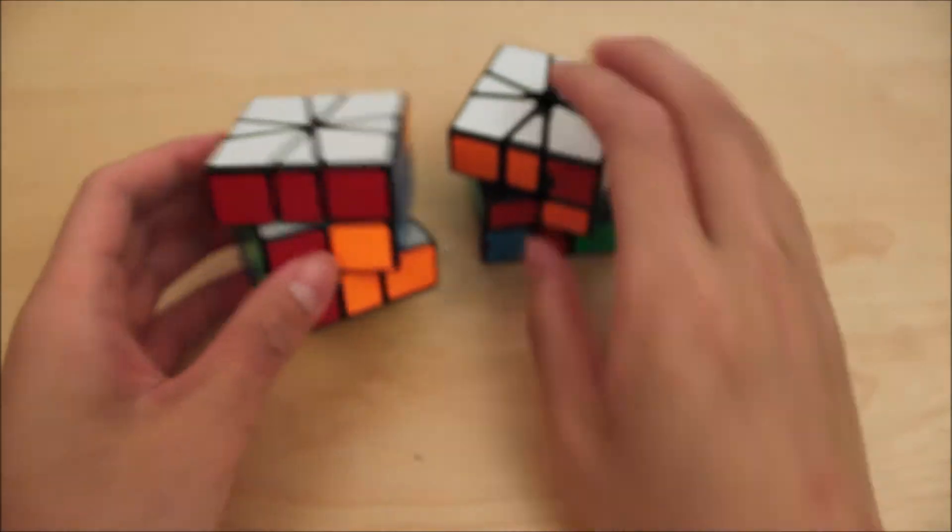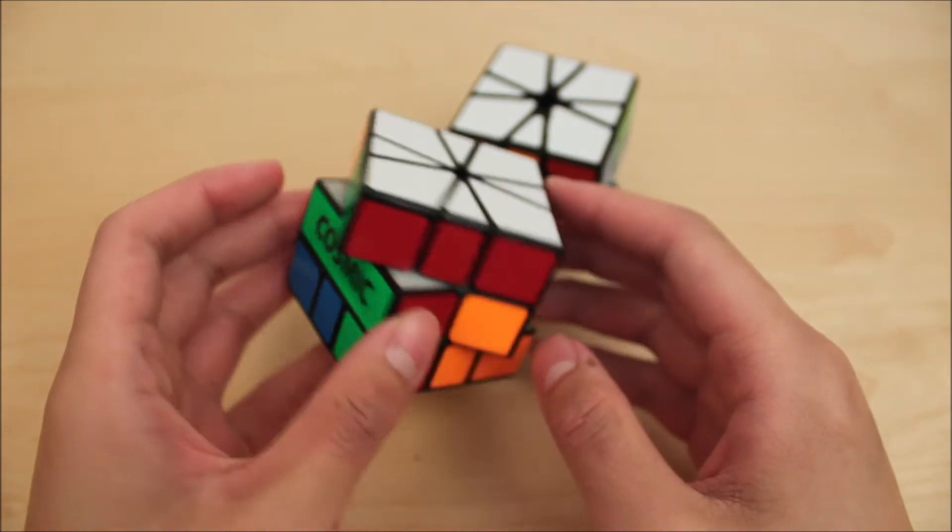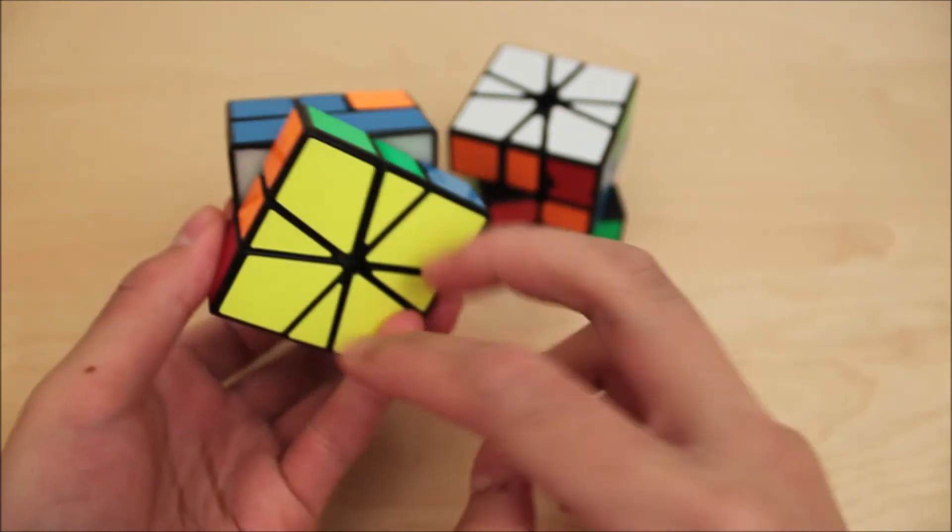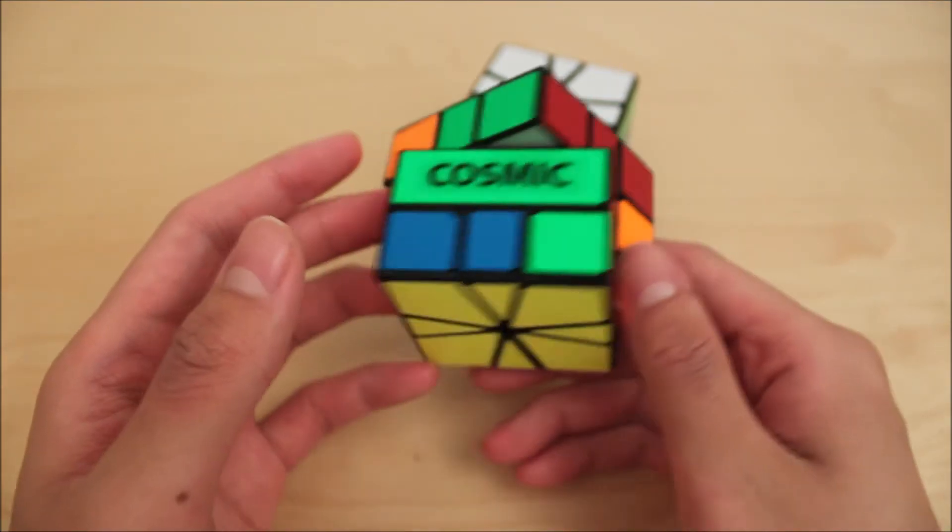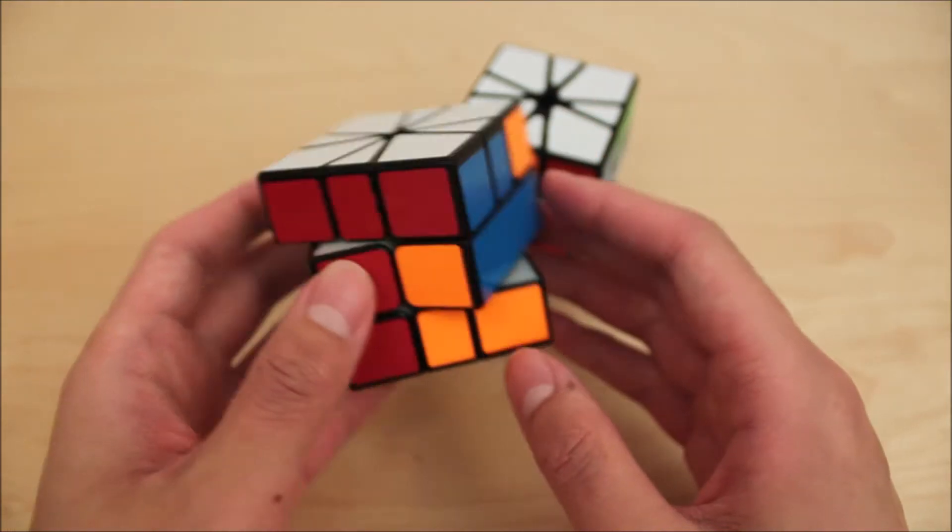So you might be wondering what the PJPN aug is, so there's no really good way to do this. You can do a setup and do a PJPJ, which is a bit slow. Here's an aug for it, but it is a bit long compared to other ones.